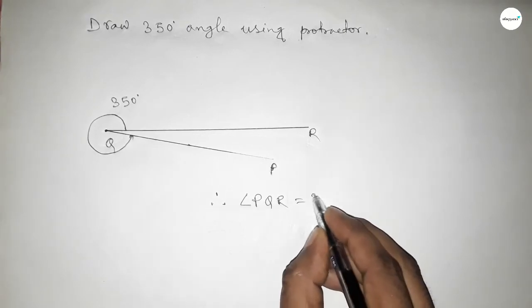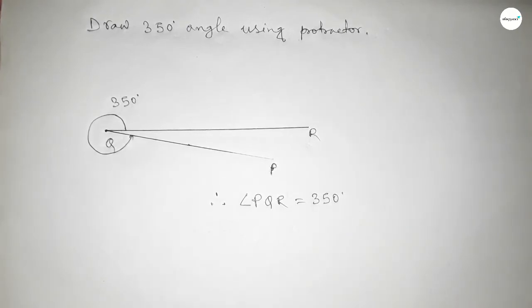Therefore angle PQR equal to we can write 350 degree angle. That's all, thanks for watching. If this video is helpful then please share it with your friend. Thanks, thank you so much for watching.